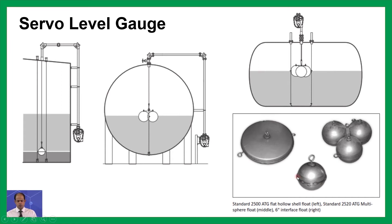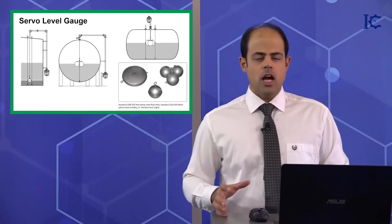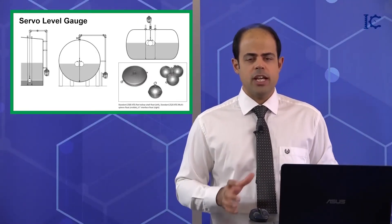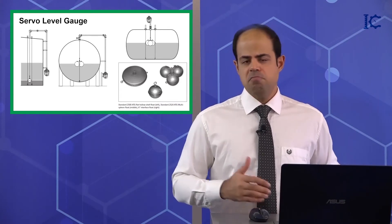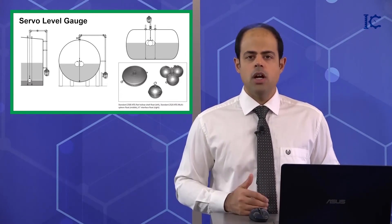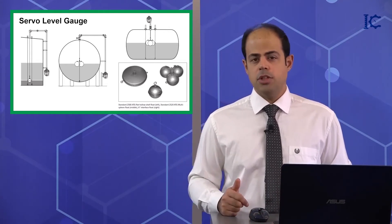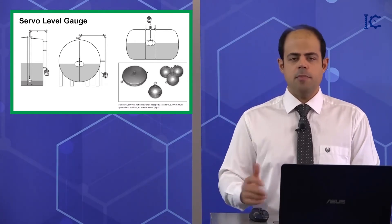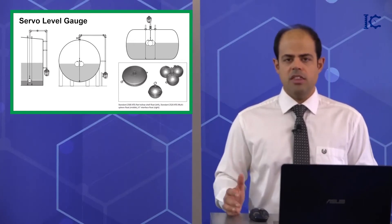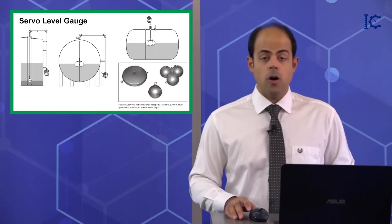You can see the different types or different shapes of the floater which are used here. The hollow floater is used for single phase, maybe when you have just hydrocarbon or water or some types of hydrocarbon derivatives, such as methanol, fuel and things like that. You are able to use the hollow floater.